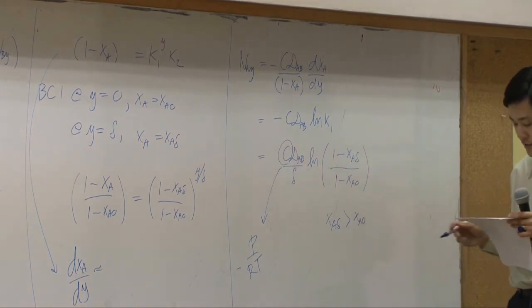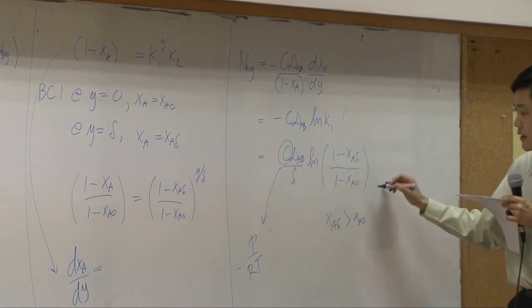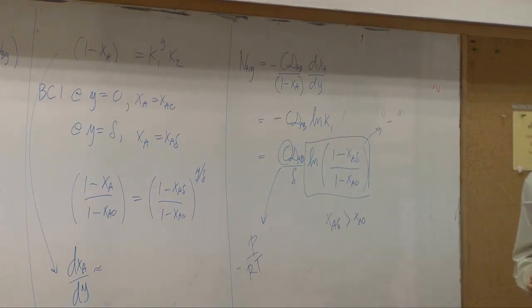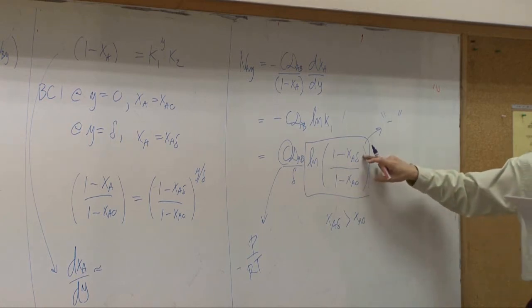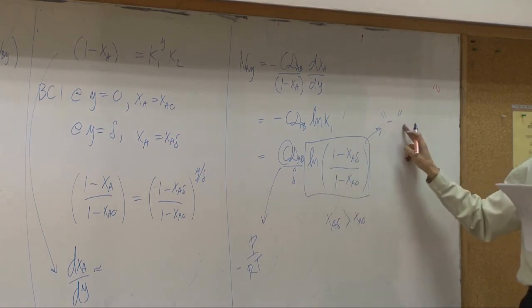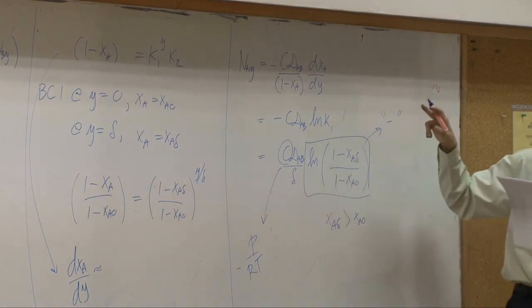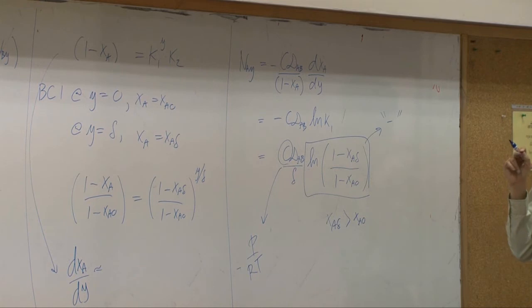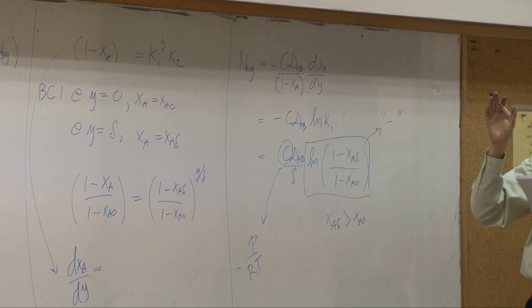So ratio here, logarithm of this is supposed to be negative. This one is greater. Therefore, when you flip it, the logarithm is supposed to be negative. Negative means the flux of A moves from the right to the left according to the picture we draw. It's moving against the direction of Y. Which is correct as long as we're concerned.